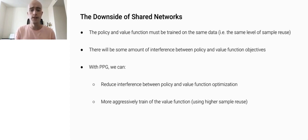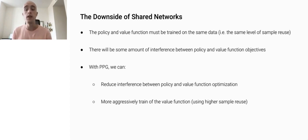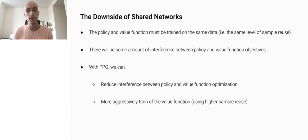There are two main downsides. First, the policy and the value function must be trained on the same data. This means we have to train both the policy and the value function with the same level of sample reuse. However, there's no reason to think that this is going to be optimal. It could be that one or the other will benefit from a higher level of sample reuse. In that case, training both at the same sample reuse will be suboptimal.